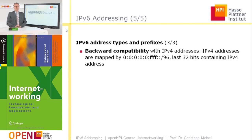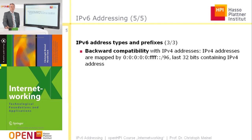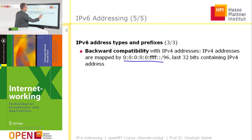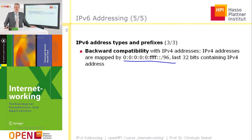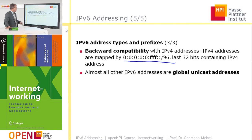There are more address types and prefixes to guarantee backward compatibility with IPv4 addresses. IPv4 addresses are mapped to IPv6 addresses such that the last 32 bits contain the IPv4 address, and the prefix indicates that this is an IPv6 address that corresponds in a simple way to an IPv4 address.